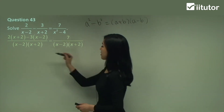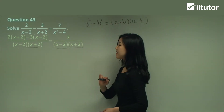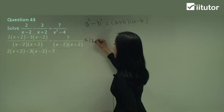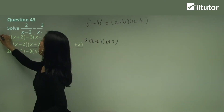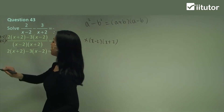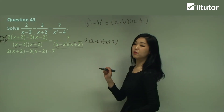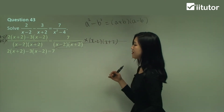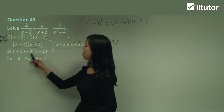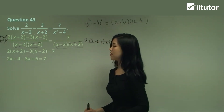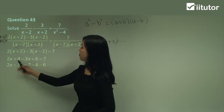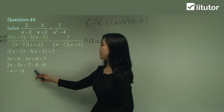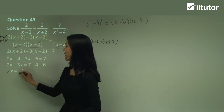Now look at the denominators — this denominator is the same as that denominator. So I'm going to multiply both sides by x minus 2 times x plus 2 to eliminate it. This and this will cancel, and this and this will cancel. So we just have 2 times x plus 2 minus 3 times x minus 2 equal to 7. Now expand: 2x plus 4 minus 3x — negative negative is plus — so plus 6 equals 7. Gather like terms: move the 4 and 6 over to the right. We have 2x minus 3x on the left, which is negative x. And 7 minus 4 minus 6 is negative 3. If it's negative on both sides, you can cancel — so x is just 3.